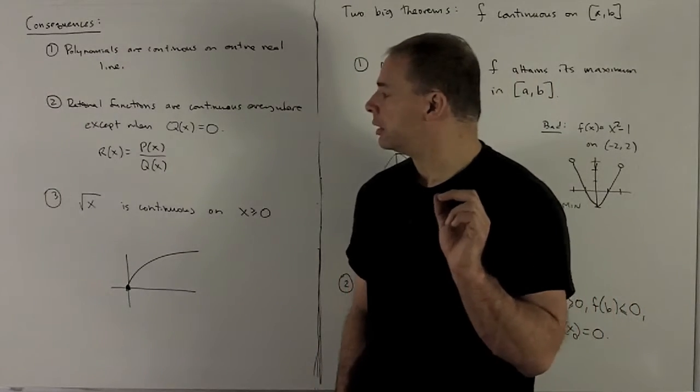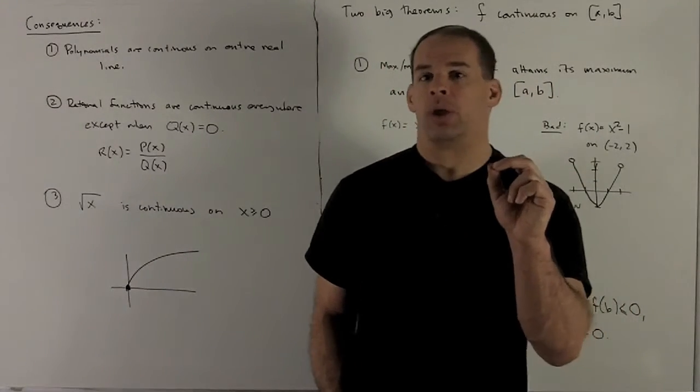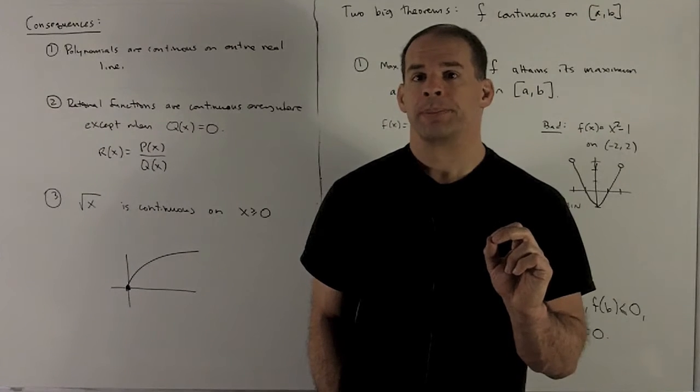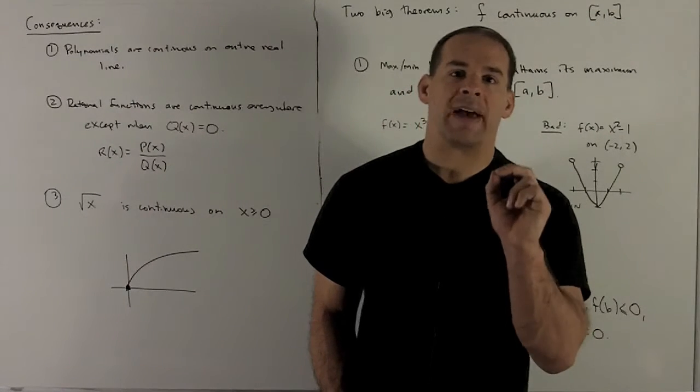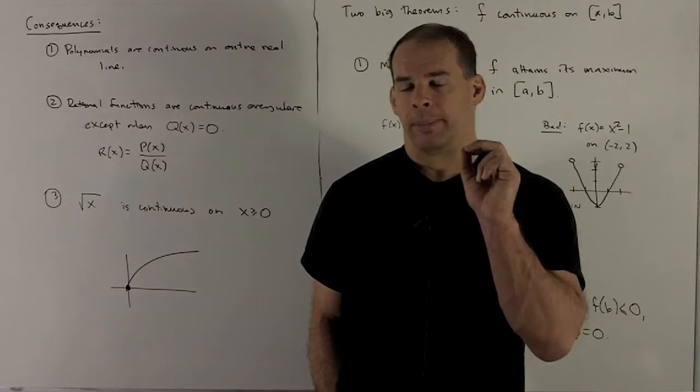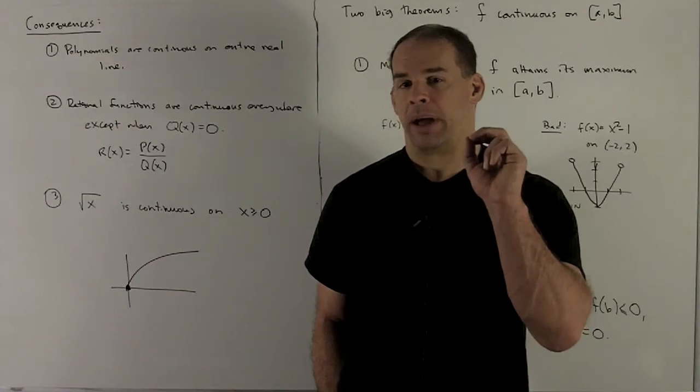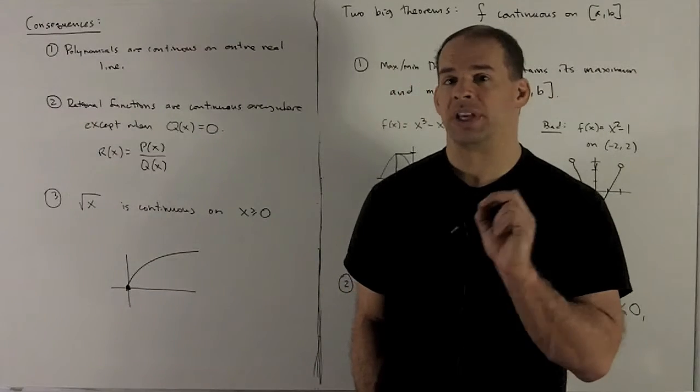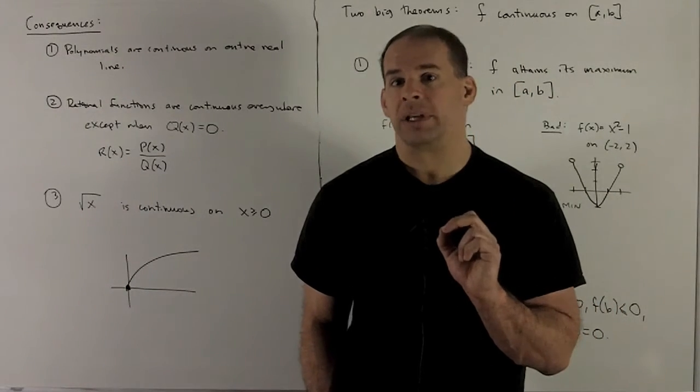Rational functions. So I take a polynomial, put it over another polynomial. Okay, our rule for that was also evaluation. You would have a limit except where the bottom function, so if I have my polynomials as P over Q, when Q is equal to zero, we get discontinuities.